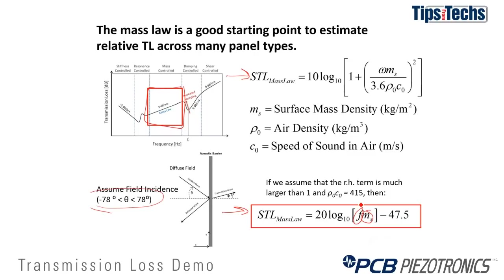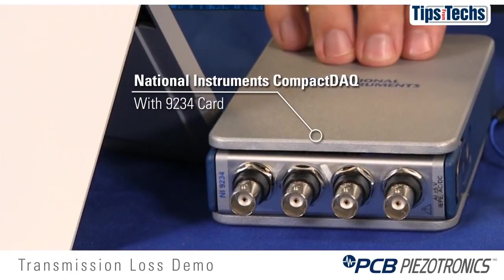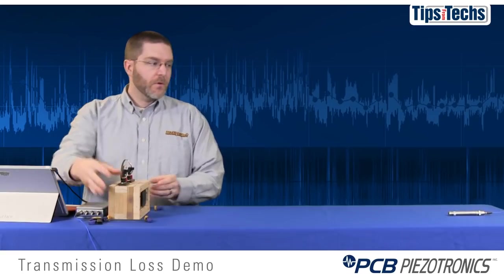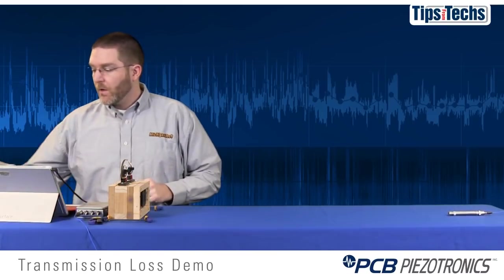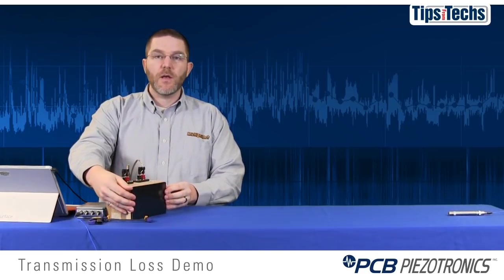For this demonstration we'll actually be demonstrating insertion loss, which is a slightly different measurement than transmission loss. Transmission loss is a ratio of power, while insertion loss is a ratio of pressure with and without a barrier, and it's much easier to demonstrate. The fundamental loss mechanism in the material is the same — it's just a different measurement technique. We'll be using a National Instruments Compact DAQ 9234 card for data acquisition, a small two-channel speaker box as a source, and a PCB model 378B02 half-inch free-field condenser microphone as our receiver. We'll place a gasket material on the speaker to avoid acoustic leaks, then put different panel materials in front of the speaker and measure the insertion loss.